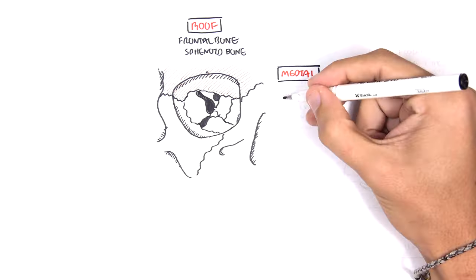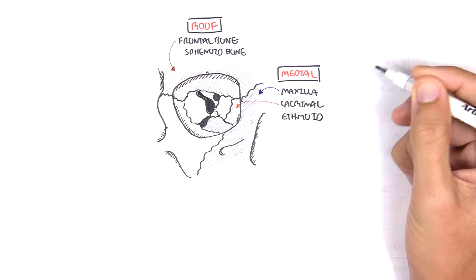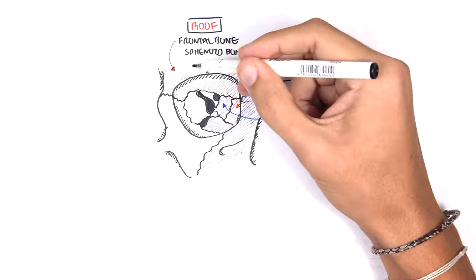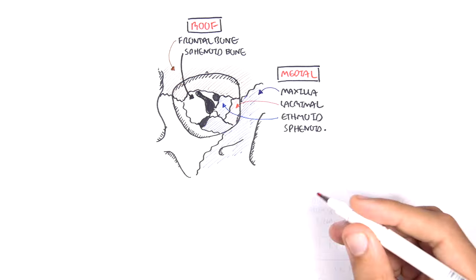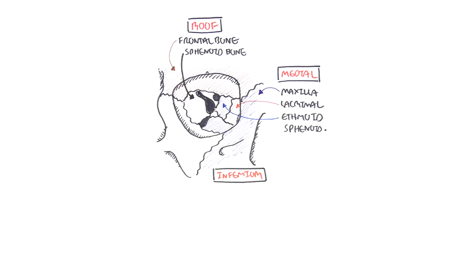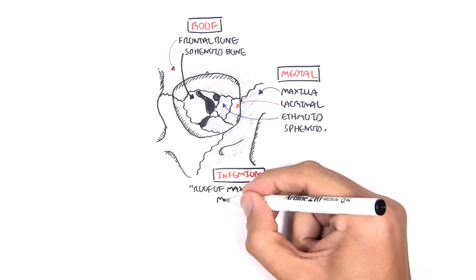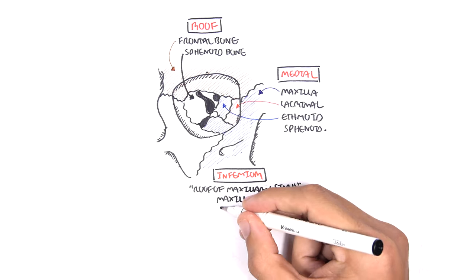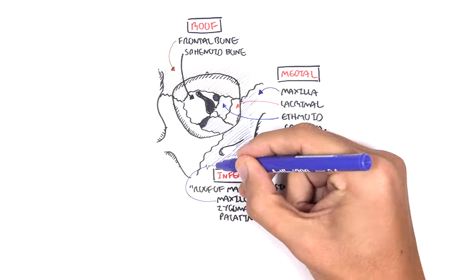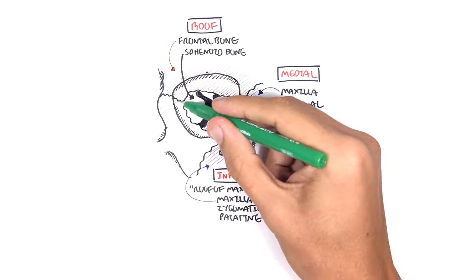The inferior border of the orbit is actually the roof of your maxillary sinus. It is made up mainly of the maxilla, zygomatic, and palatine bones — here's your maxilla, zygomatic, and palatine bones.